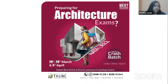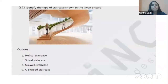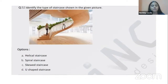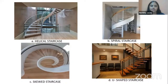Let's start with the first question: identify the type of staircase shown in the given picture. The four options are helical, spiral, skewed, and U-shaped staircase. These options are very confusing because most are curved or circular staircases. But if you understand what each term actually means, it becomes easy. I'll show you pictures of each kind of staircase for reference.